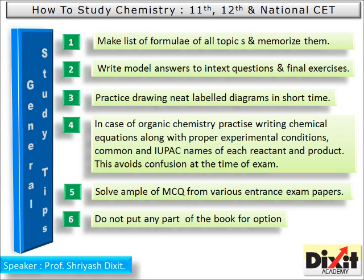Here are some general study tips. One: make a list of formulae from all topics and memorize them. Two: write model answers to in-text questions and final exercises; if possible, read in a loud voice, record these notes, and listen to the audio notes again and again for long-term retention. Three: practice drawing neat labeled diagrams in short time. Four: in case of organic chemistry, write chemical equations along with proper experimental conditions, and include both common and IUPAC names of each reactant and product to avoid confusion at exam time.